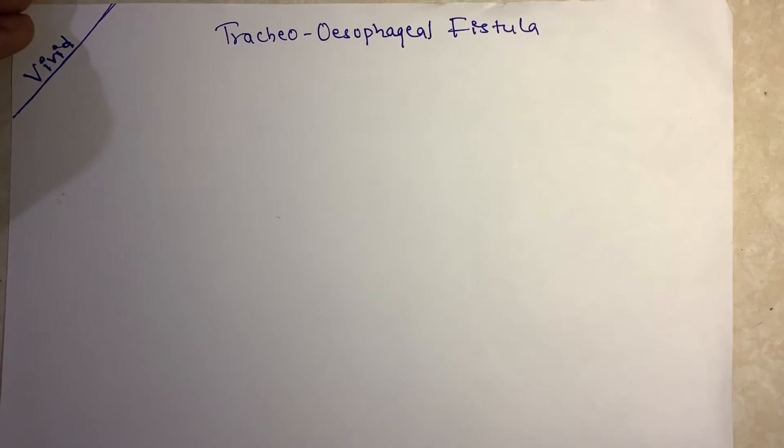Tracheoesophageal fistula is an anomaly which shows a defect of esophageal continuity with or without fistula to the trachea or bronchi. So to remember the types of tracheoesophageal fistula, I use a small story that helps me remember.